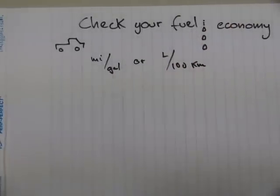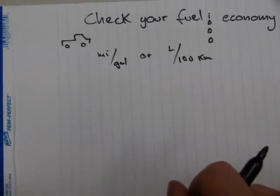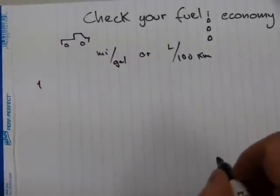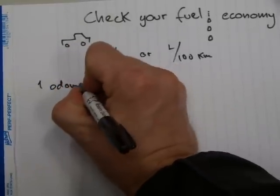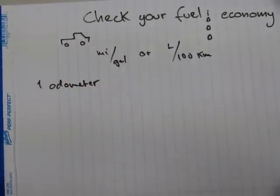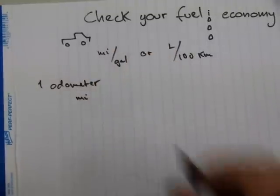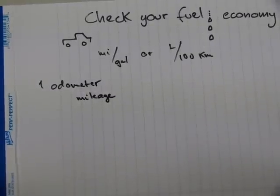Okay, let's get started with this one, miles per gallon. You need two pieces of information recorded accurately to get this calculation done. The first one is that you need your mileage from your odometer.